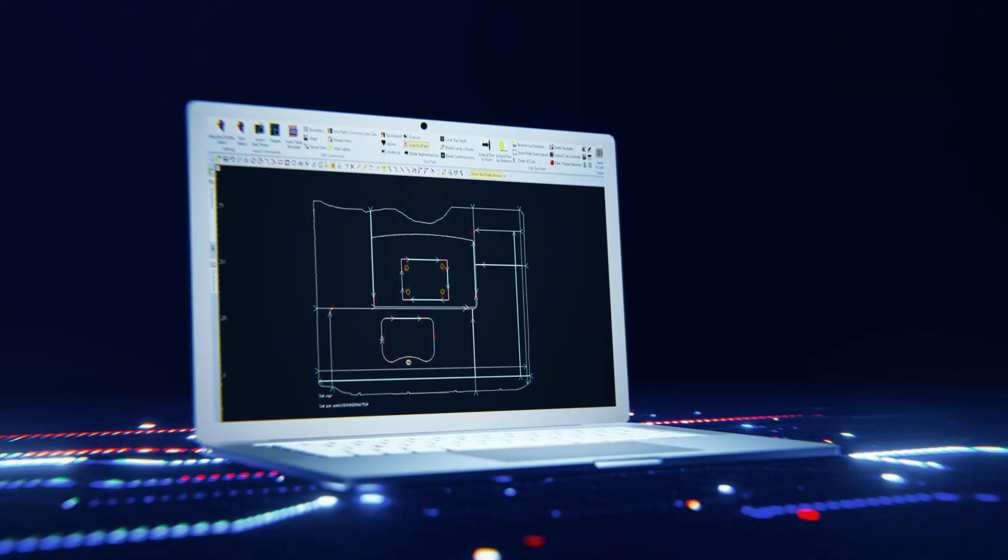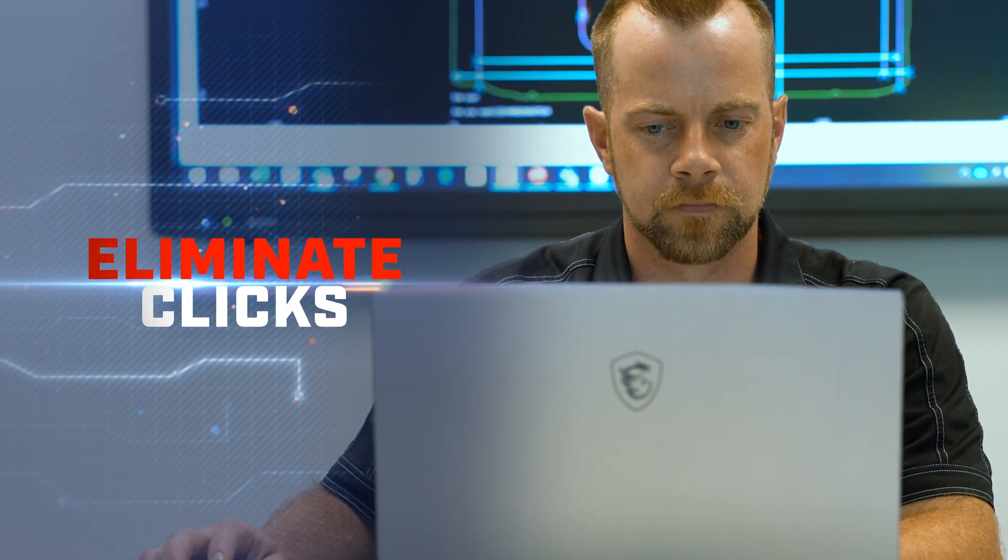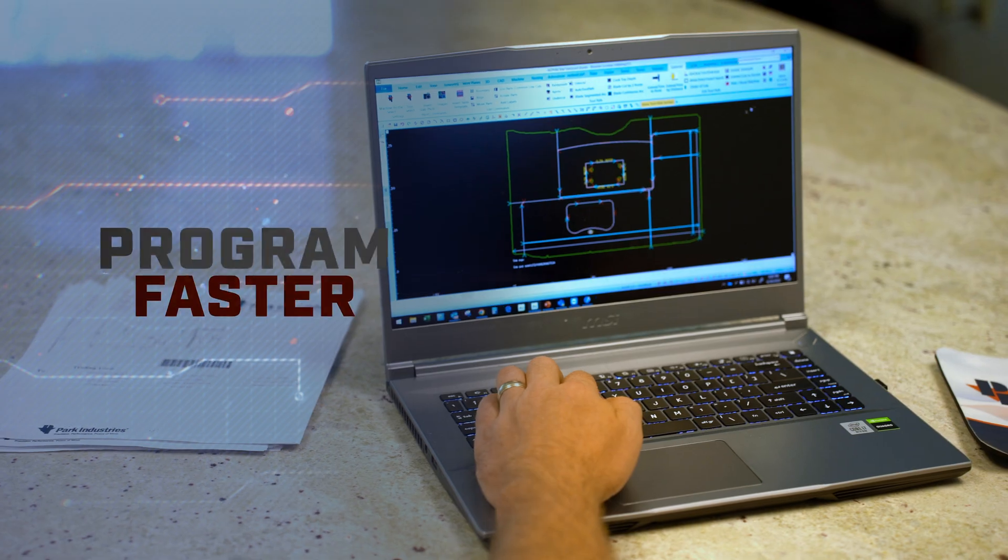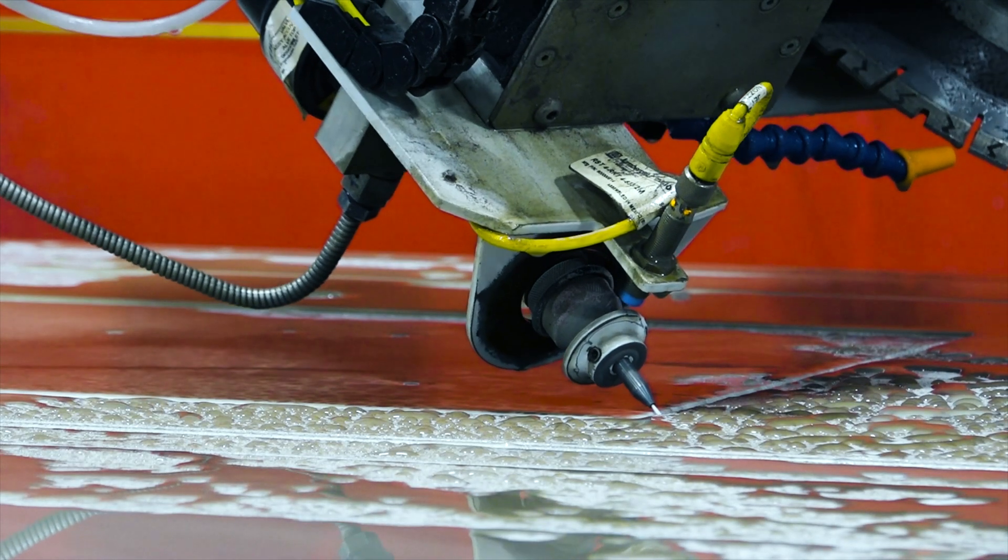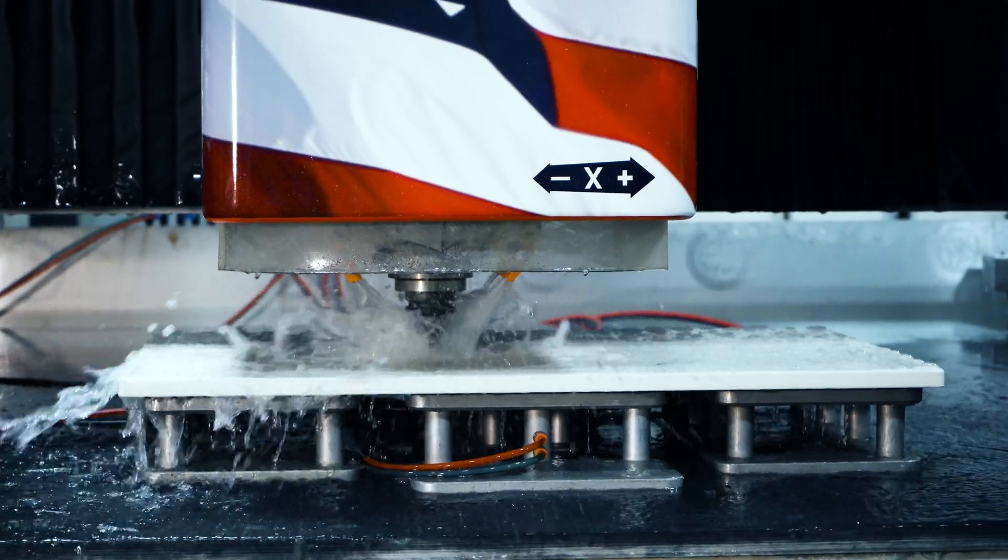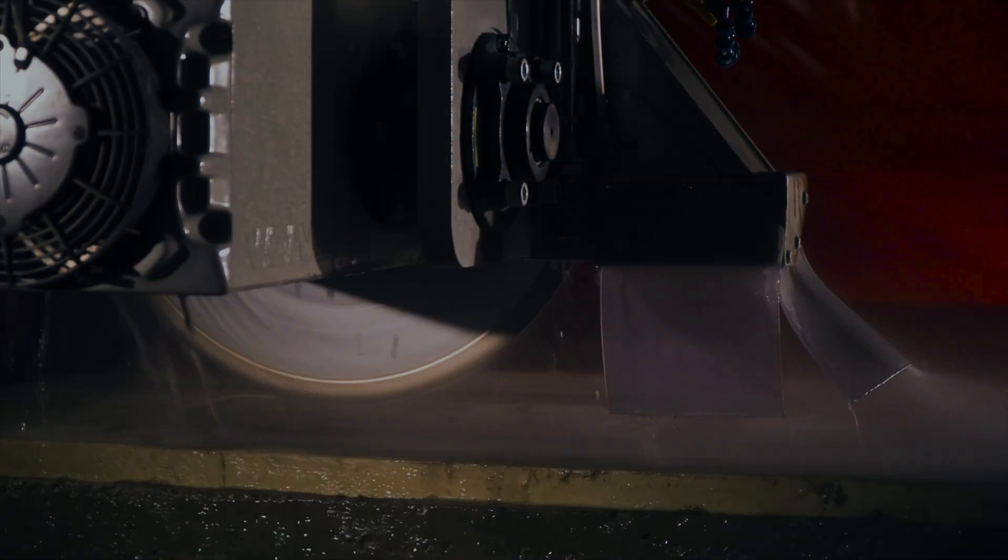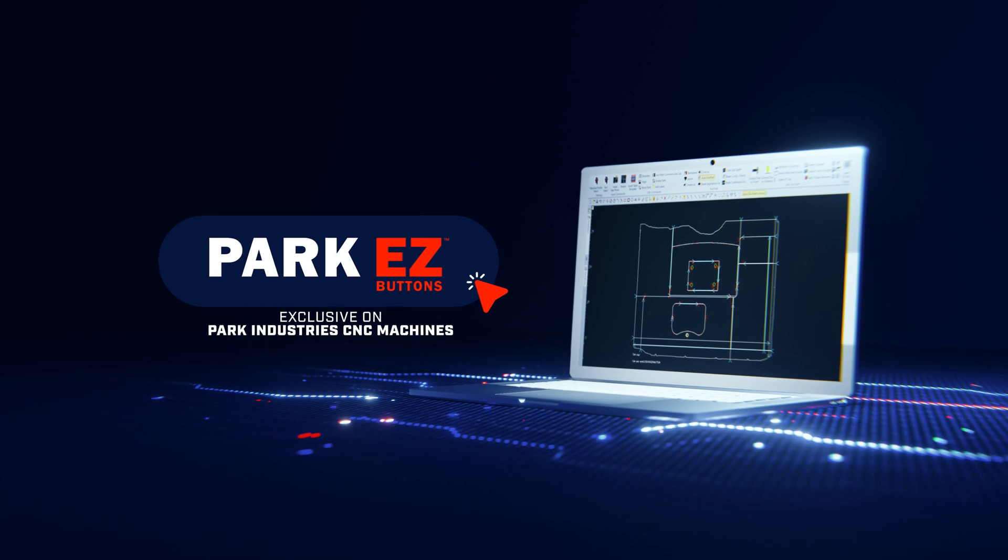In a single program, you can eliminate over 500 clicks and save 30 plus minutes of your programming time with Park Easy Buttons. Afraid to go digital or wasting clicks on complicated machinery? Start programming easy with Park Industries.